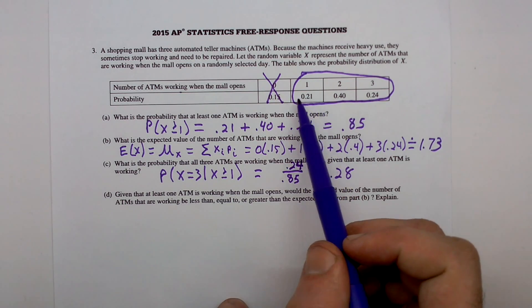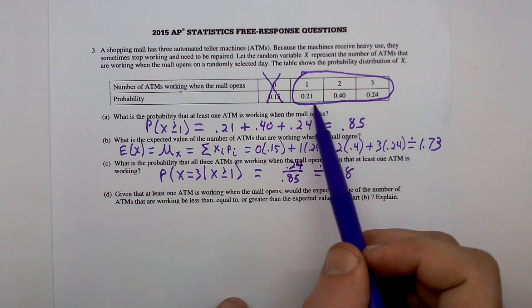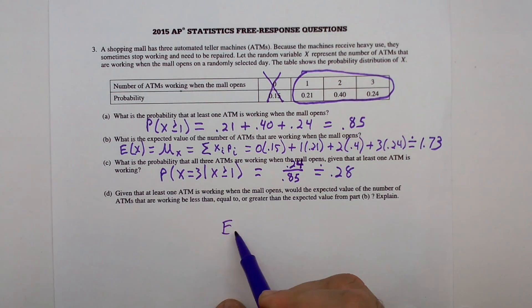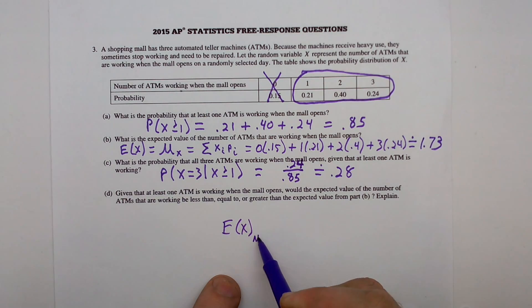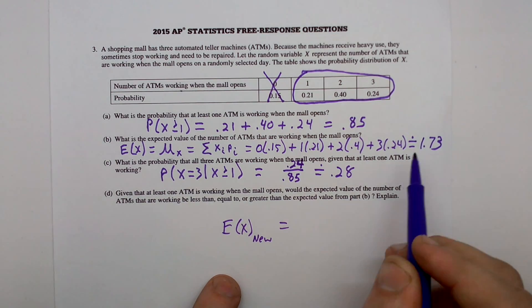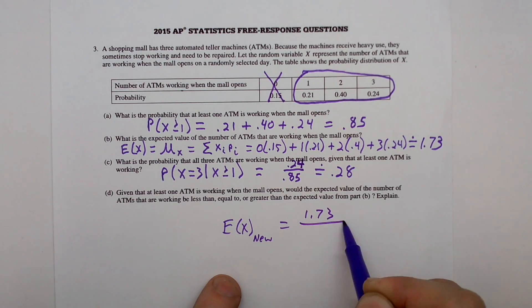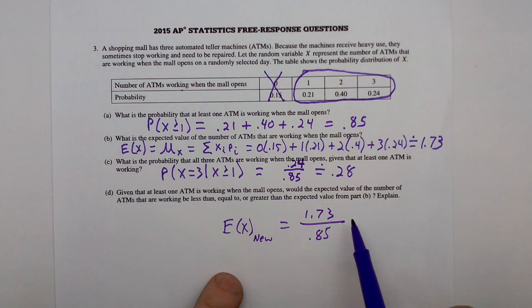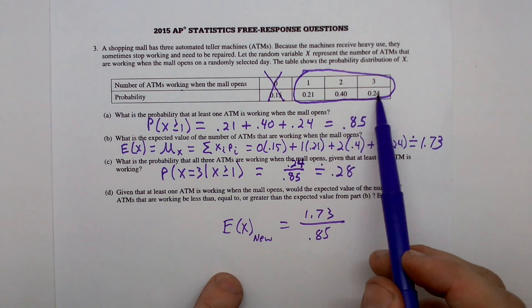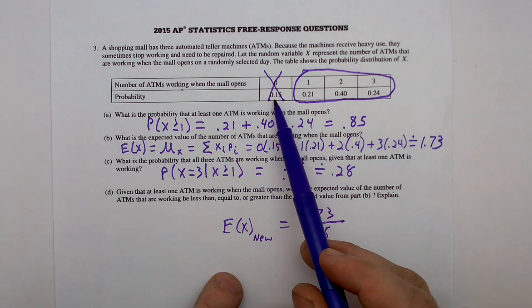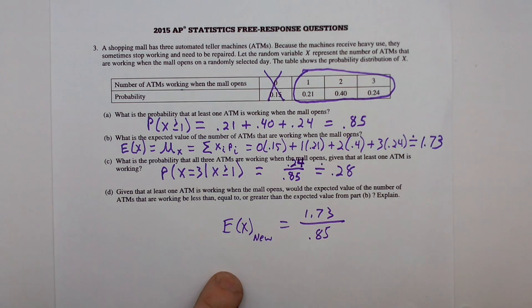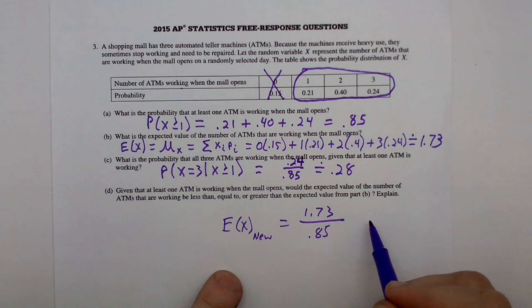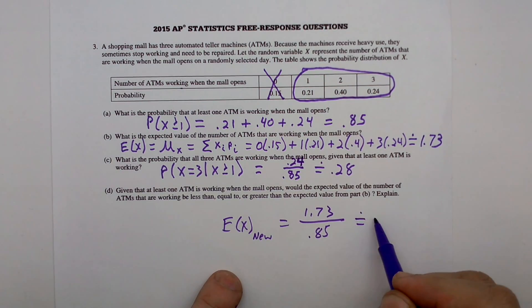Well, how would we calculate that? Well, our new denominator, instead of considering 1 here, our new denominator is this 0.85. We'll take our old expected value, which is, I'm going to call this our expected value new. It's going to be our old expected value, 1.73, and we're going to divide by 0.85. That's our entire set precluding this value there. So 1.73 divided by 0.85, that's approximately 2.04.